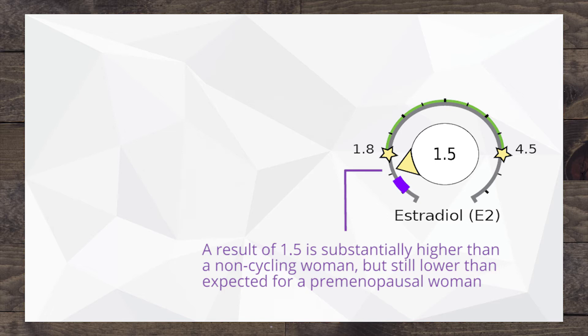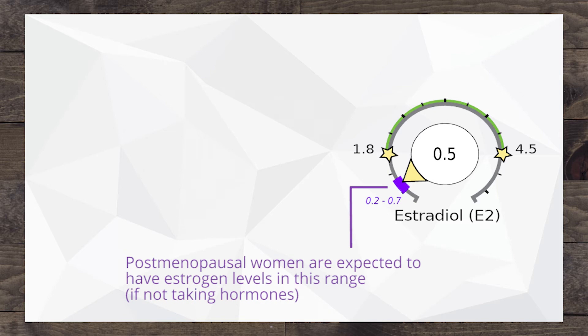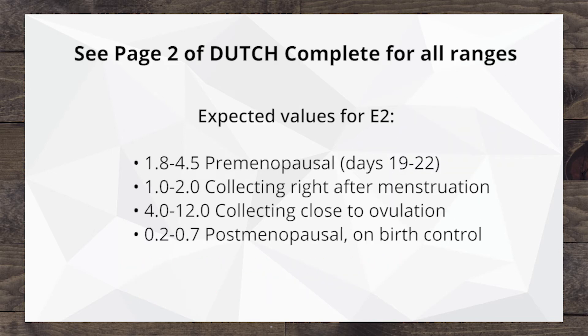When we get down into that little purple band, now we're talking about levels that are expected for postmenopausal women. So if a woman is 65 and not cycling anymore and not supplementing, that's where we expect to find her. However, if a premenopausal woman who's not on birth control and collects at the right time of the cycle, if she finds herself in this range, then the ovaries are really not making the hormones that we expect them to at this phase.